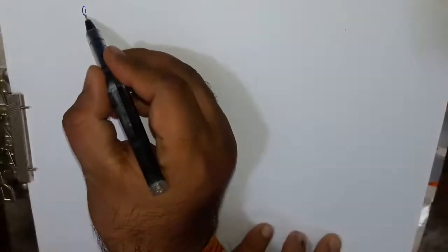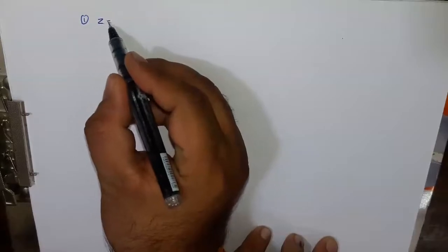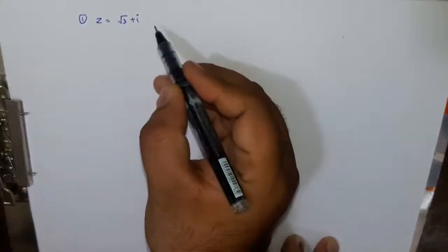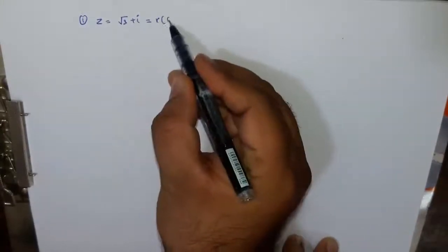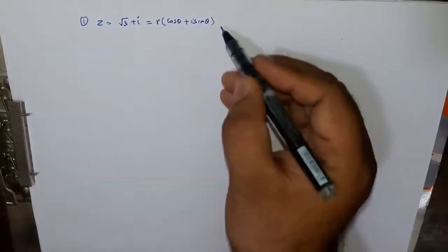Let us start with some questions on polar form. Questions form mein aayega ki write the polar form or find the polar form or find the modulus and argument in each of the following. Toh first of all example lete hain, z equal to root 3 plus iota. So we will start with this in this way, ki hum iski polar form let kar lete hain, let the polar form of this will be r cos theta plus iota sin theta.